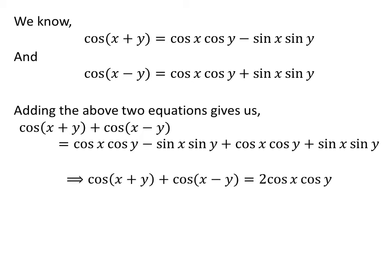Straight addition gives us cos(x + y) plus cos(x - y) equals 2 cos x cos y.